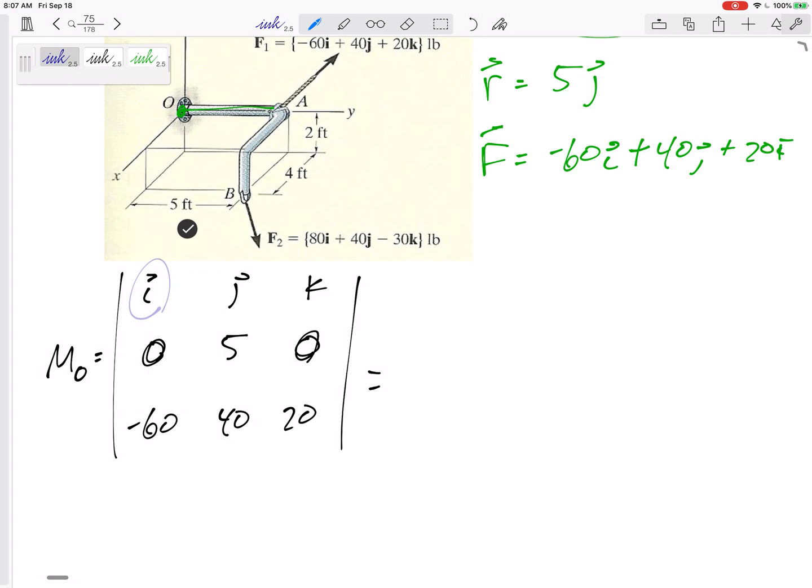Let's look at the i's. So I'm going to do this. My i component would be 5 times 20 minus 0 times 40.